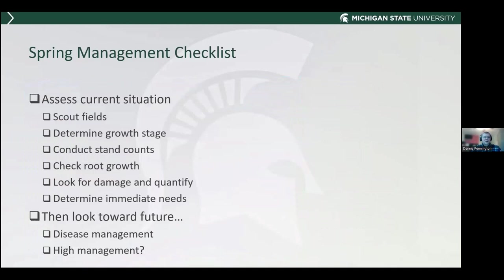Now is a good time to assess your current situation. Get out and scout fields, determine what growth stage you're at, and if you have wheat planted at different dates, check those because they might be at different growth stages. Conduct stand counts, dig some plants, check the roots for growth, look for any damage, then quantify how much damage you have and use that information to determine if there are immediate needs. Also start looking ahead at diseases and what kind of management to apply.